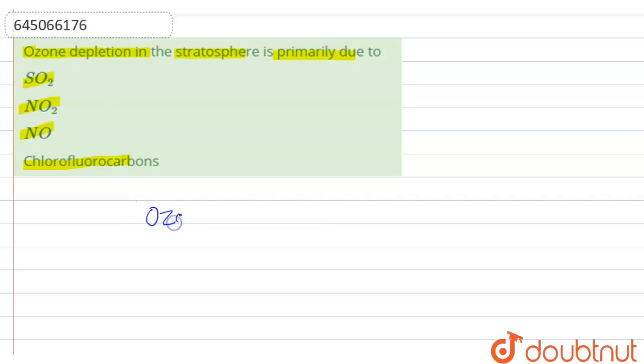Here we have ozone layer present in stratosphere region of atmosphere. It will absorb harmful UV rays coming from the sun and ensure that UV rays will not come on the Earth's surface, and it will help to protect us.